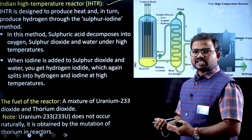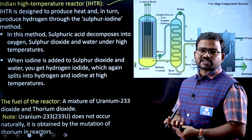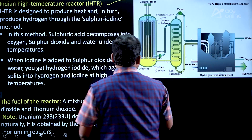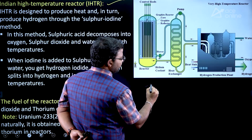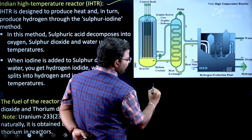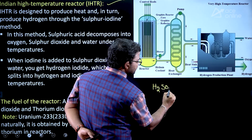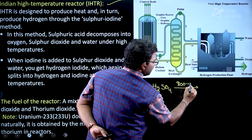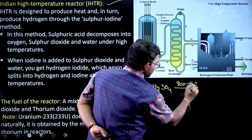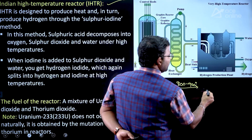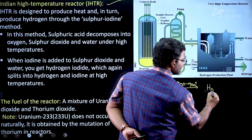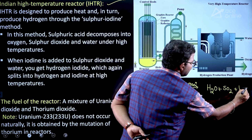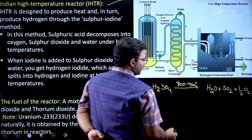The high amount of heat generated by these reactors is used for hydrogen production. For example, using sulfuric acid: at temperatures of 800 to 900 degrees centigrade, sulfuric acid dissociates into sulfur dioxide, water, and oxygen. This is the first step of the thermochemical cycle for hydrogen production.